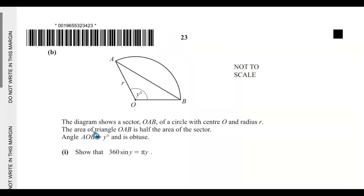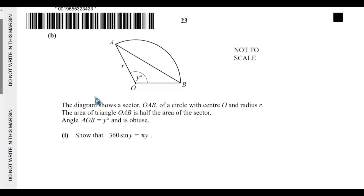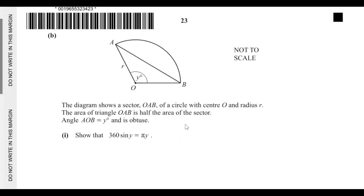Part B: the diagram shows a sector OAB of a circle with center O and radius R. The area of triangle OAB is half the area of sector OAB, and the angle is Y degrees, where Y is an obtuse angle. Show that 360 sin Y equals π times Y.